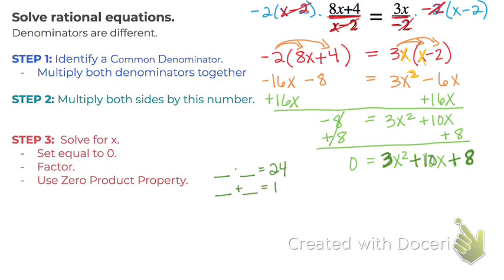And also add to give us this middle coefficient, so add to give us 10. So if you think of the different options, hopefully you see that it's positive 6 and positive 4.